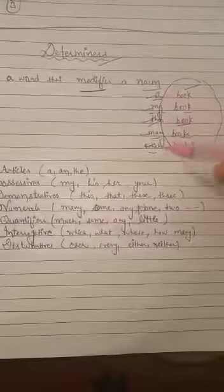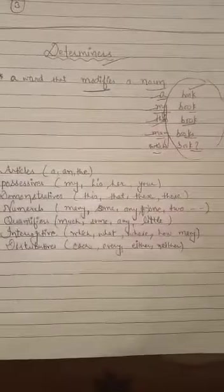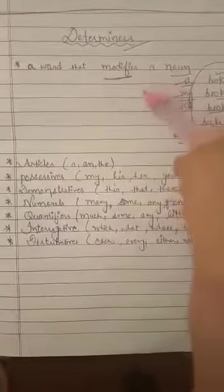So these all words a, my, this, many, which are determiners. So a word which modifies a noun are called determiners.